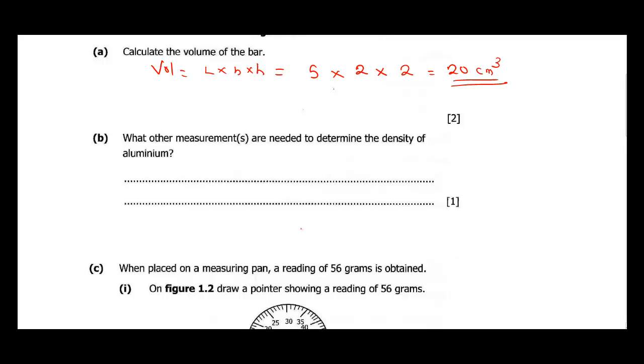Part B asks what other measurements are needed to determine the density of aluminum. Density is mass over volume of material, so the other material needed to determine the density is the mass.